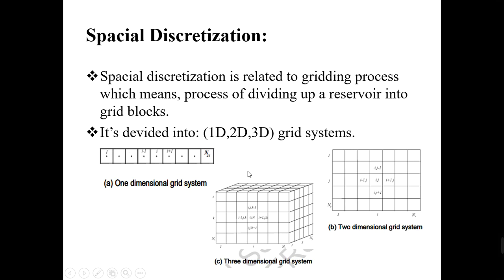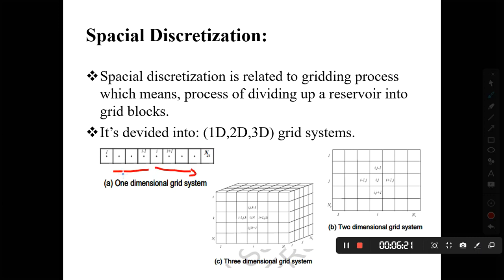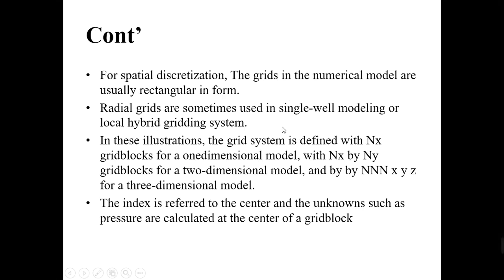We have one-dimensional, two-dimensional, and three-dimensional grid blocks. One dimension means the fluid is moving in a straight line — either forward or backward in one direction. In two dimensions, the fluid can flow in x or y direction — four possible neighbors. Our real reservoirs are actually 3D, so the fluid can go in x, y, and z directions. This is the one-dimensional, two-dimensional, and three-dimensional grid block system.